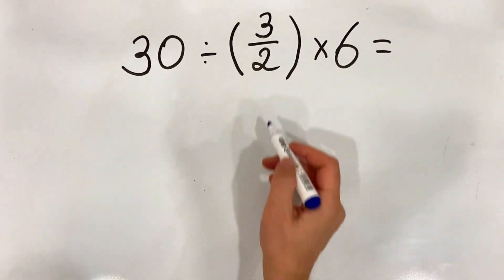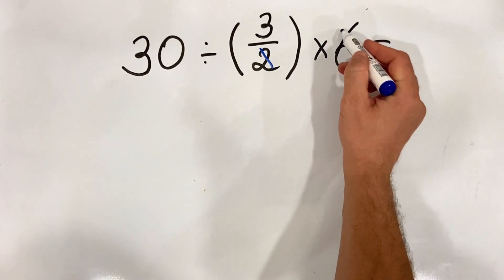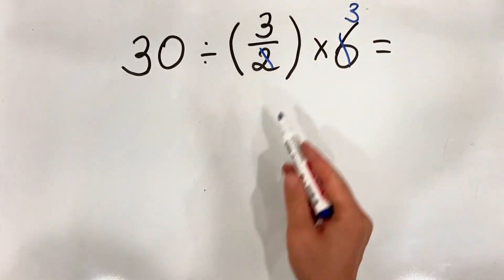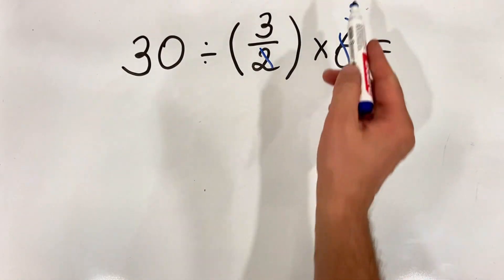3 over 2 multiplied by 6. We simplify 2 by 2 and get 3, and we have 3 multiplied by 3.